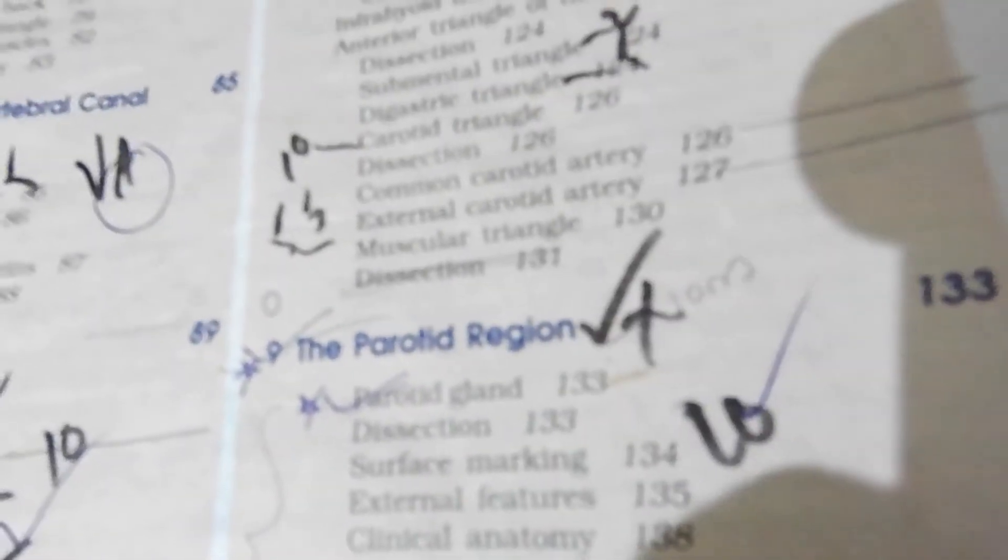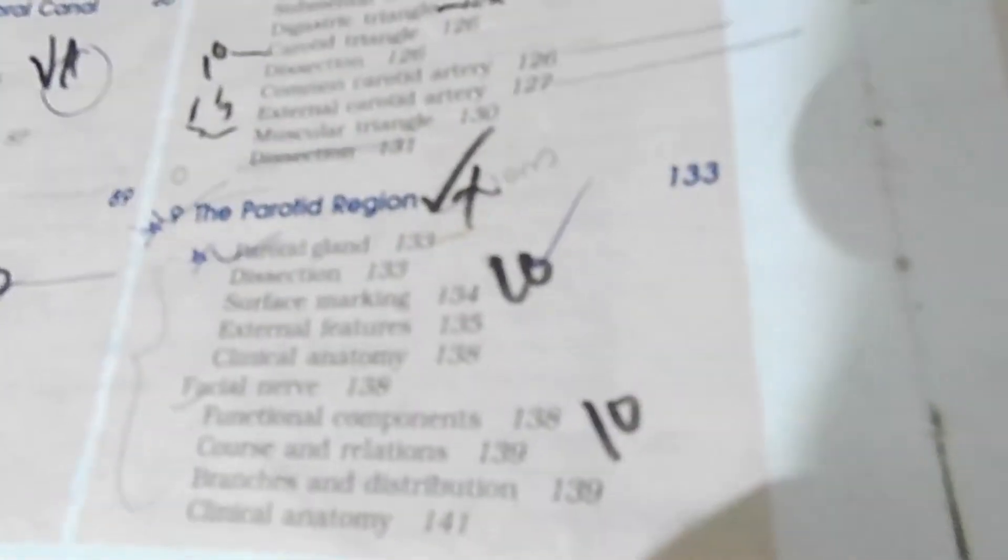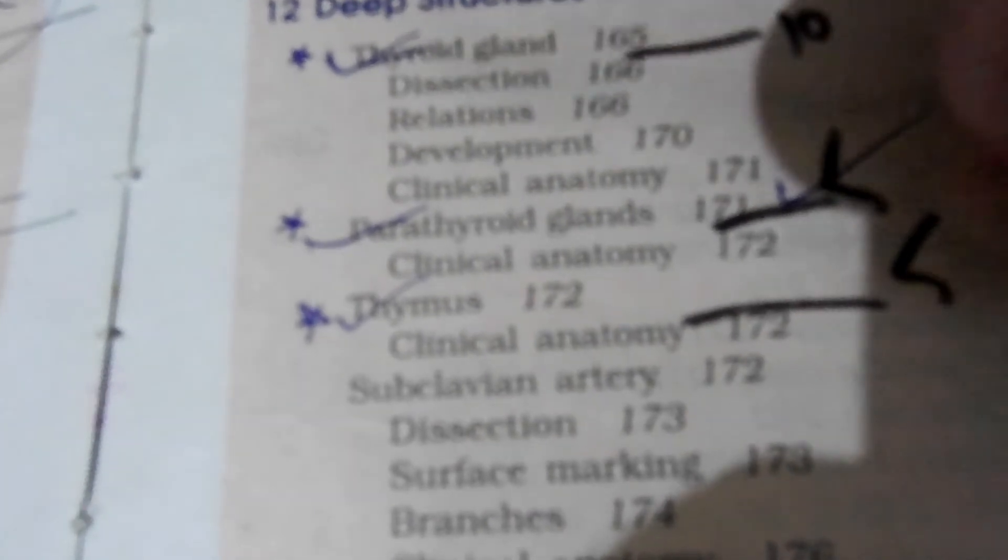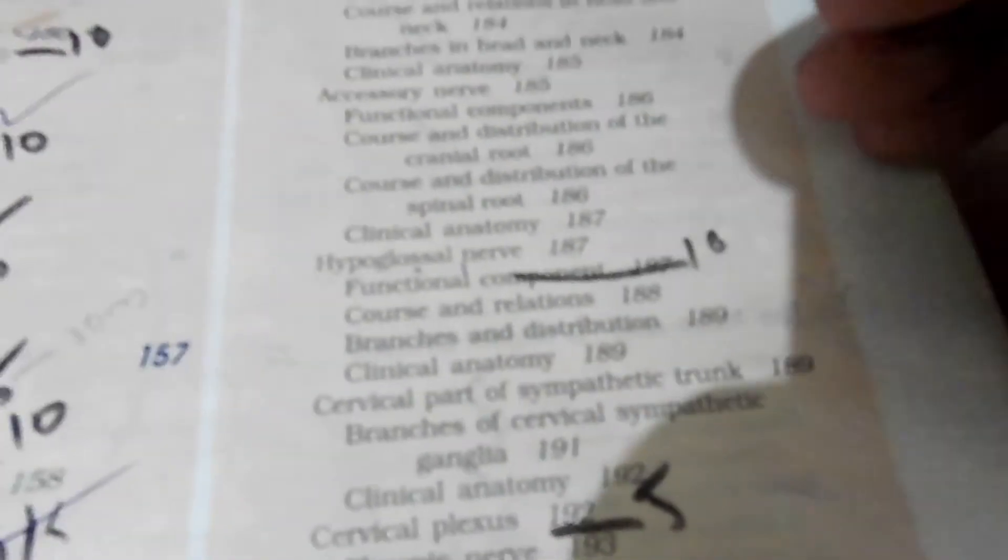Parotid region, full five mark question will come in that region. Skip to the twelfth chapter for the syllabus of physiotherapy. In physiotherapy you have only the thyroid gland, parathyroid, and including the thymus for five marks.